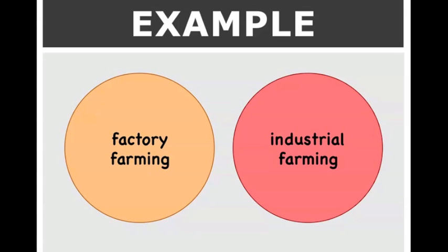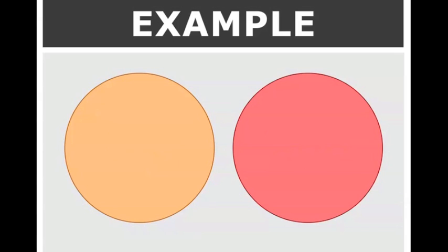Conducting a search by using the OR operator to connect the terms factory farming and industrial farming will instruct the database to search for materials containing either term and populate the search results with any materials that fit this criteria. This will be a significantly larger pool of results than the number of available materials for either term separately.